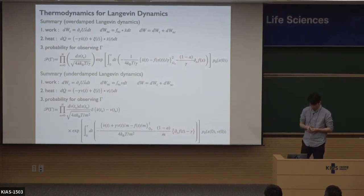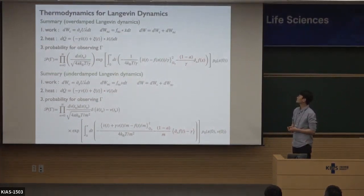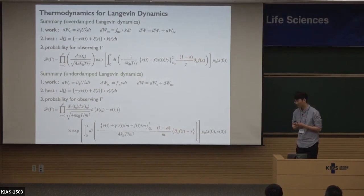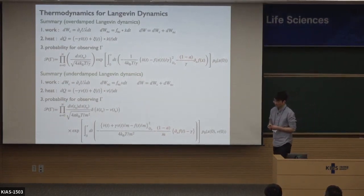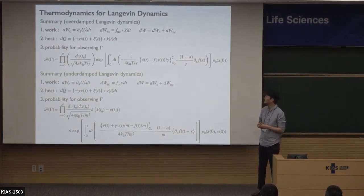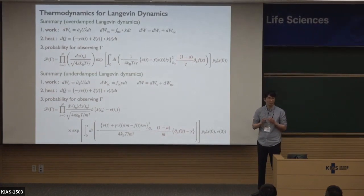Yesterday I talked about the thermodynamics for the Langevin system — the definition of work and heat and how to evaluate the path probability. Today, I am going to talk about — starting from the thermodynamics for the Markov jump process.